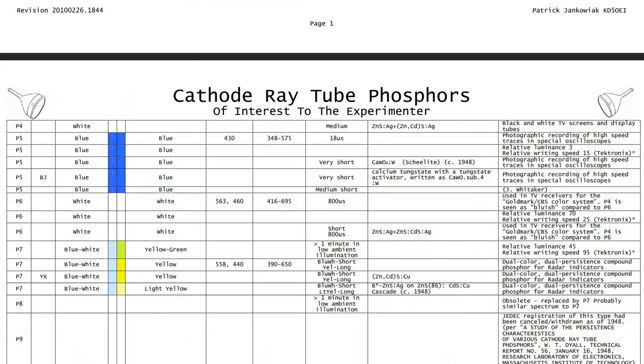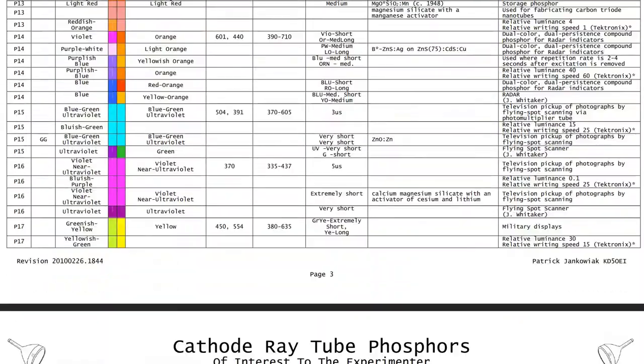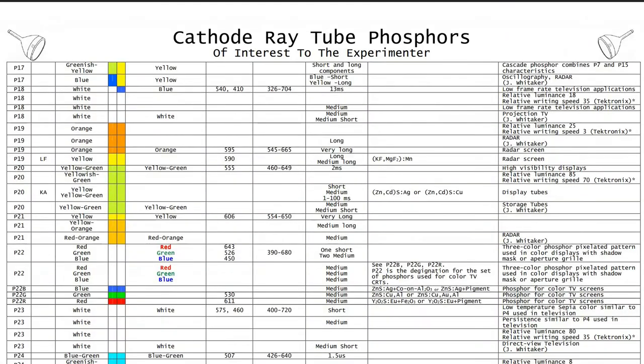Subsequent key standardized phosphors have been given increasing P numbers, and P22 is the phosphor used in cathode ray tubes for color television.